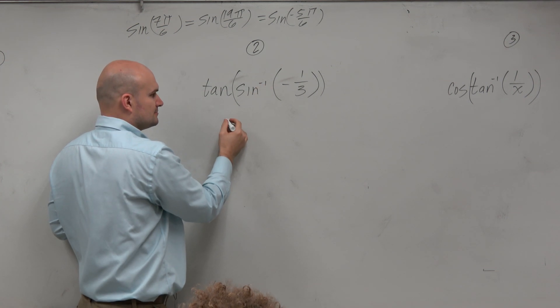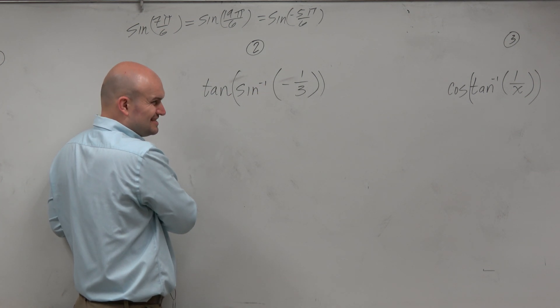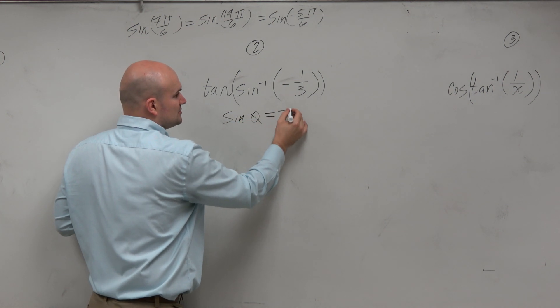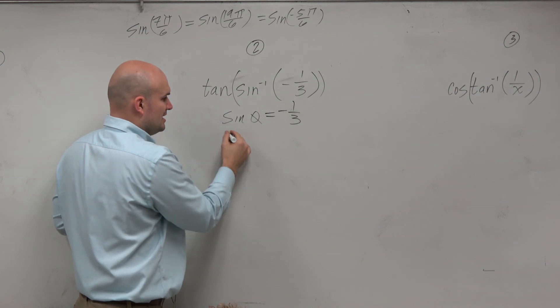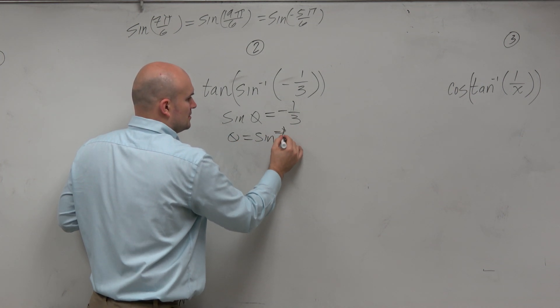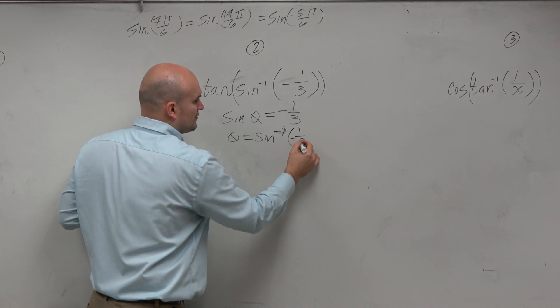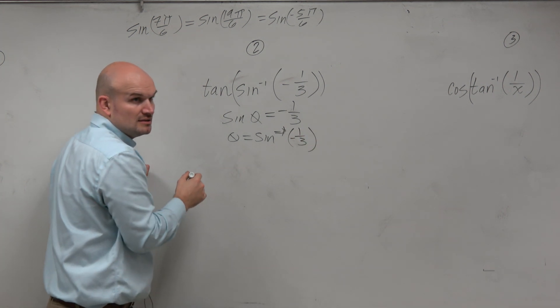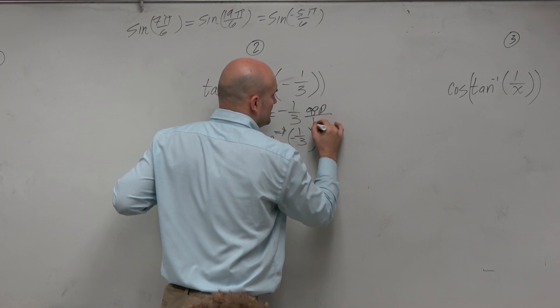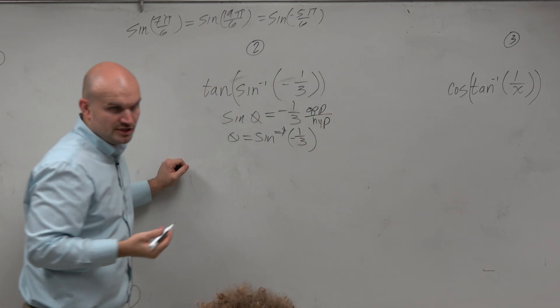The sine inverse of negative 1 over 3, let's think about that. If I said the sine of some number is equal to negative 1 over 3, then we could say theta equals sine inverse of negative 1 over 3, correct? So this negative 1 over 3 is the opposite over the hypotenuse. Do you guys agree?